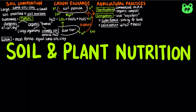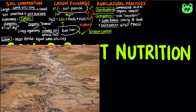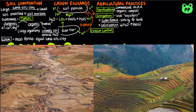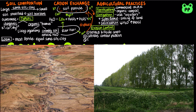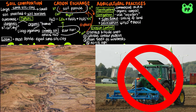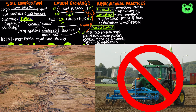Topsoil from farmland can also be lost to water and wind erosion, which causes loss of nutrients. Erosion can be reduced by terracing hillside crops, cultivating in a contour pattern, planting trees as windbreaks, and practicing no-till agriculture.